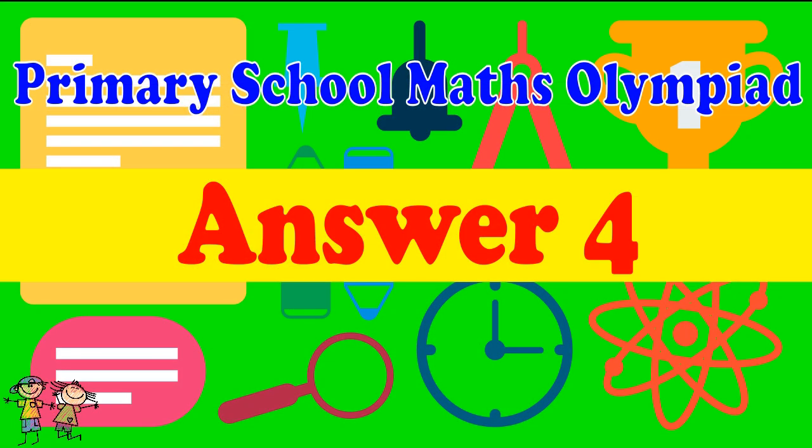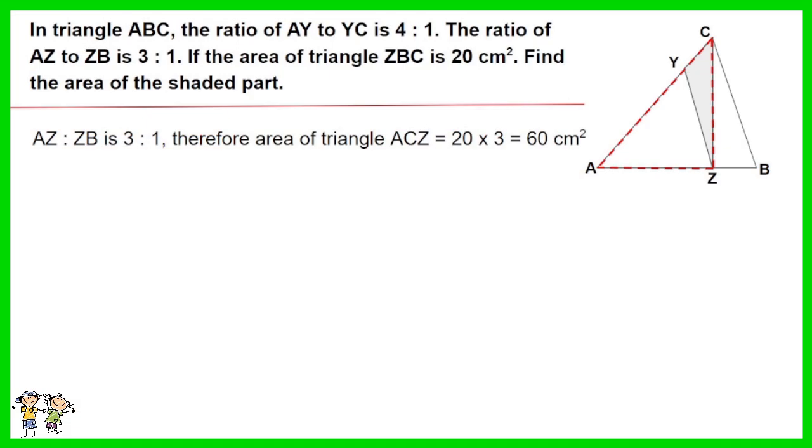Answer for question 4: The ratio of AZ to ZB is 3 to 1. Therefore area of triangle ACZ equals 20 times 3 equals 60 cm squared.